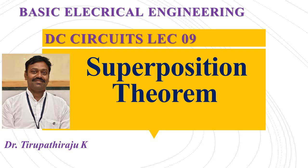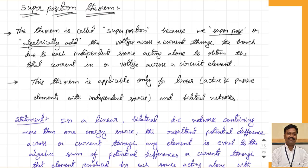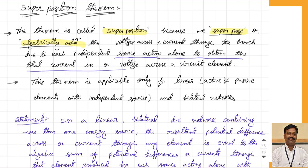Good morning all. Today we are going to discuss the superposition theorem. This theorem's name itself is telling superposition because we are superposing or algebraically adding the voltage across or current through the branch due to each individual source acting alone, to obtain the total current or voltage across a circuit element.